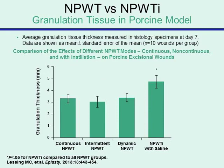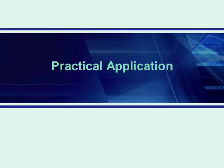An article by Lessing et al., published in 2013, examined NPWT versus NPWT with instillation looking at granulation tissue in a porcine model. Figure 4 shows examples of continuous, intermittent, and dynamic NPWT, and demonstrates that NPWT with instillation using saline showed a significant increase in granulation tissue thickness compared to the other modalities in the excisional wound model.